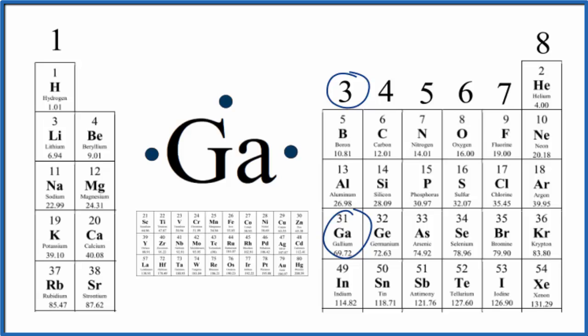When gallium forms bonds with other atoms, it'll lose these three electrons, it'll become Ga3+. It's lost three negative charges. Let's take a look at that.